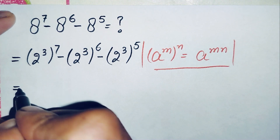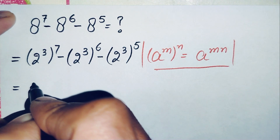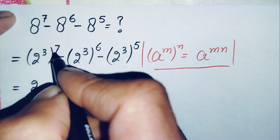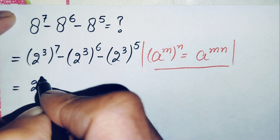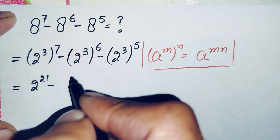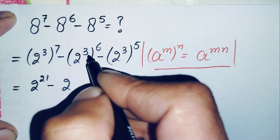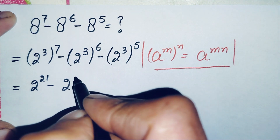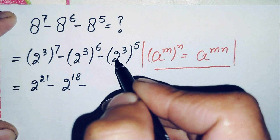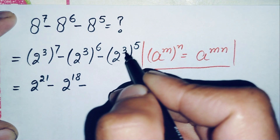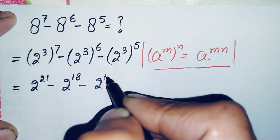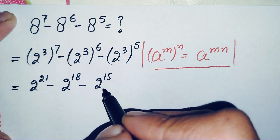Using this exponent math property, this expression will become: 2 raised to power 3 times 7 is 21, so 2^21, minus 2 raised to power 3 times 6 is 18, so 2^18, minus 3 times 5 is 15, so 2^15.